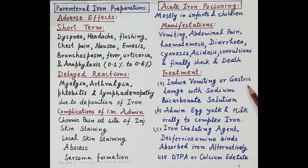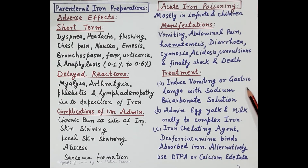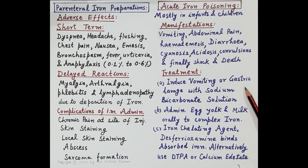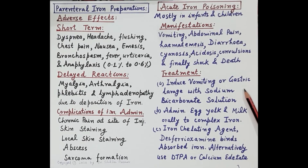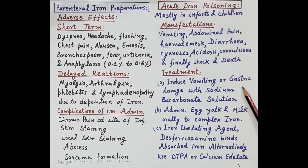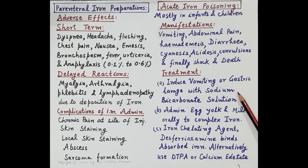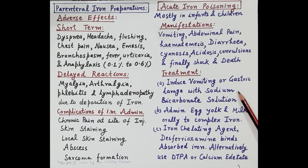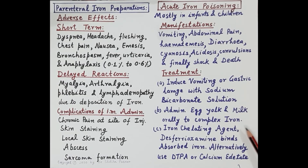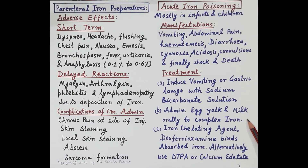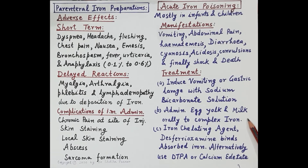The first and most important treatment is to induce vomiting or perform gastric lavage with sodium bicarbonate solution, in order to remove iron from the gastrointestinal tract. Sodium bicarbonate makes iron insoluble so it is not absorbed. A second option is to administer egg yolk and milk orally to complex the iron, which also prevents its absorption.